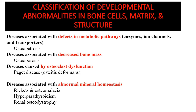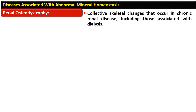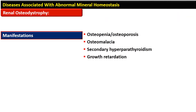Diseases associated with decreased bone mass include osteoporosis, characterized by spongy and soft bone with decreased bone mass. There are also diseases caused by osteoclast dysfunction. Renal osteodystrophy refers to morphological alterations in the bone in the presence of chronic renal disease, encompassing changes associated with dialysis. Manifestations include osteopenia or osteoporosis, osteomalacia, secondary hyperparathyroidism, and growth retardation.